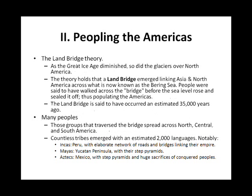Topic 2: Peopling the Americas. The Land Bridge Theory holds that as the Great Ice Age diminished, so did the glaciers over North America. A land bridge emerged linking Asia and North America across what is now known as the Bering Sea. People were said to have walked across the bridge before the sea level rose and sealed it off, thus populating the Americas. The land bridge is estimated to have occurred around 35,000 years ago.